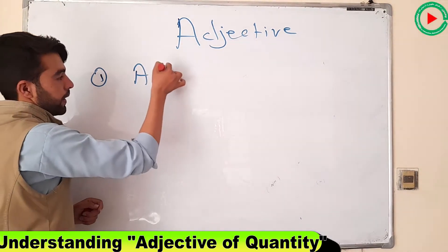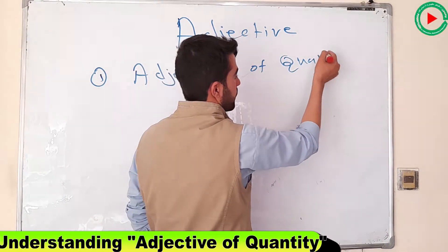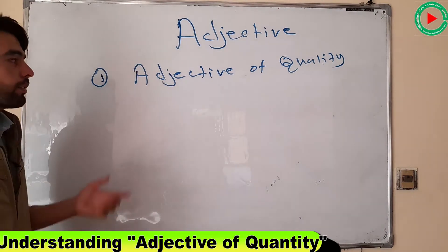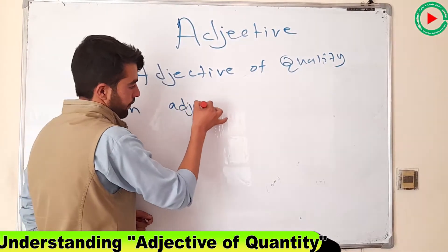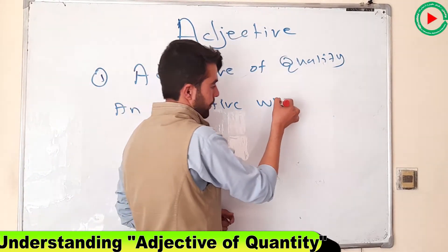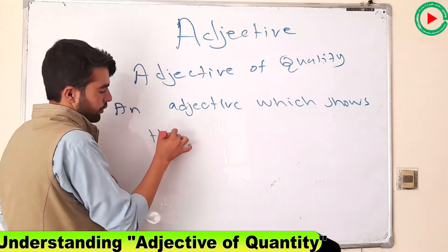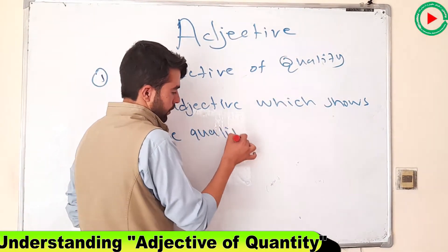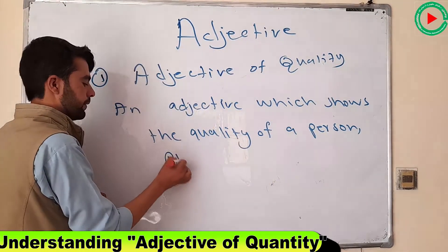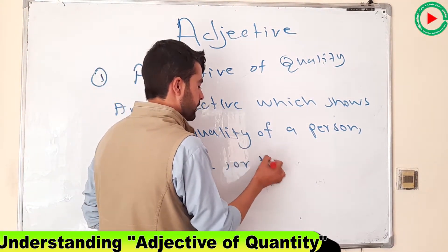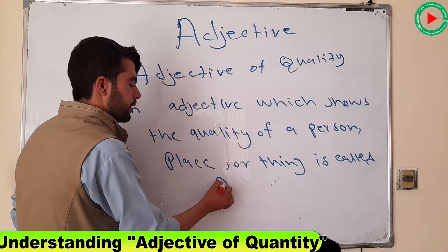Adjective of quality. What does this introduce? An adjective which shows the quality of a person, place, or thing is called adjective of quality.